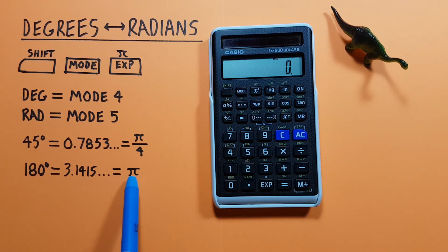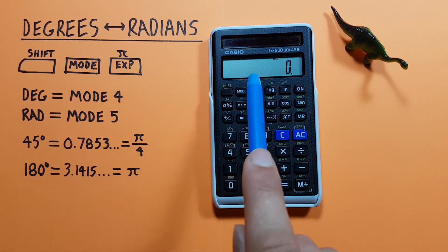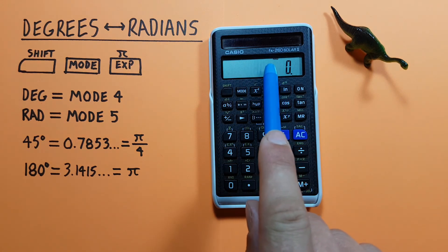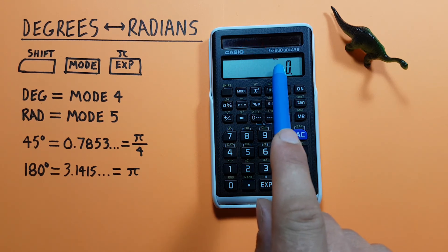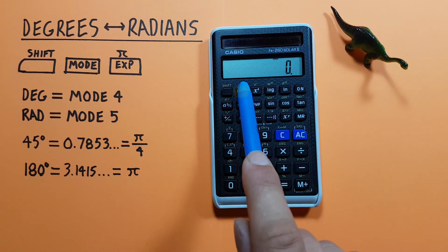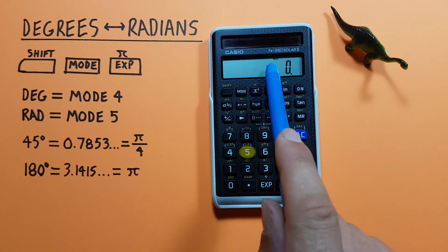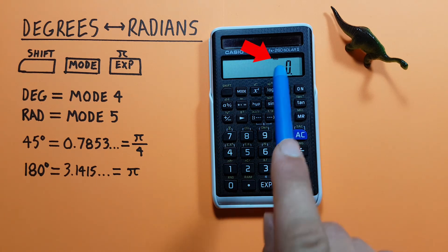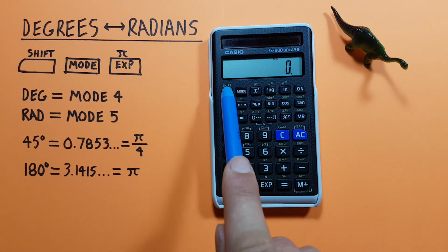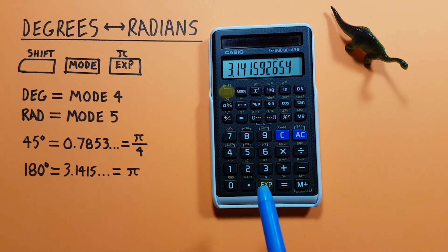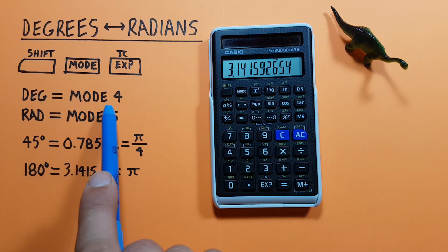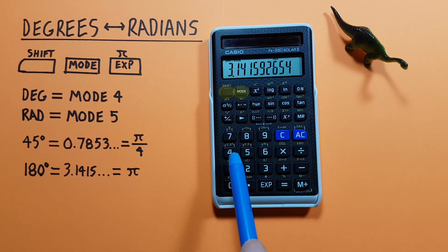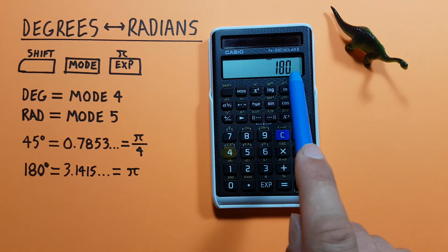Let's take it in reverse. Let's say we were given pi and wanted to get that as degrees. Again we want to start in the mode that we're entering. Since we're already in radians we're okay, but if we weren't we would change to radians mode by pressing the mode 5 key and seeing RAD at the top. Next we enter our pi with shift pi. Then we change our mode to degrees mode with shift mode 4 and see that we get 180 degrees.